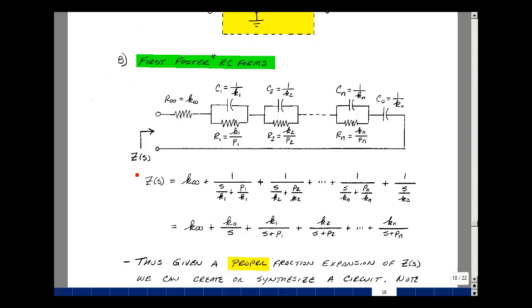Z of S is equal to the sum of these elements in series. I've got a resistor here I'll call K of infinity. These two in parallel would be the sum of their admittances and then the reciprocal would be the impedance. The admittance of this term is just P1 over K1, and the admittance of this term is S times C, which would be S times 1 over K1. Likewise for the second term all the way through the nth term and then lastly a single capacitor, whose impedance would be 1 over its admittance, which would be S times the value of C, which is 1 over K0.